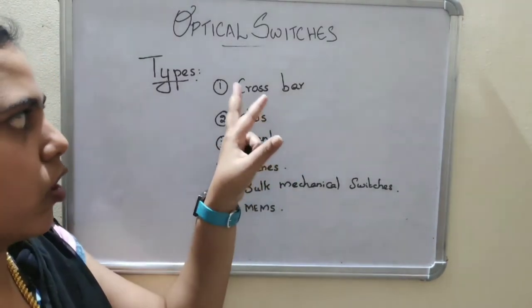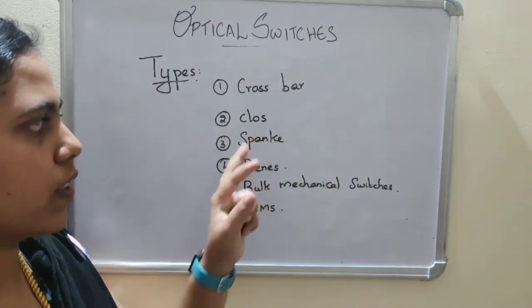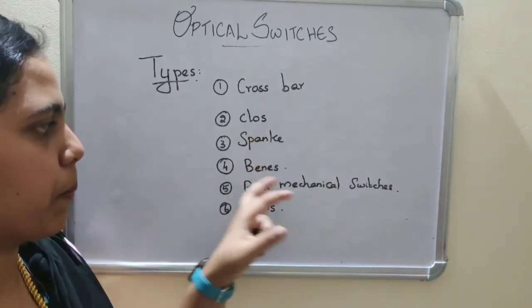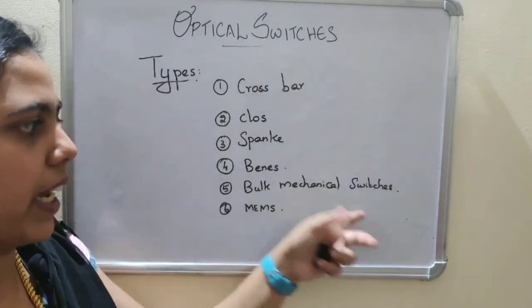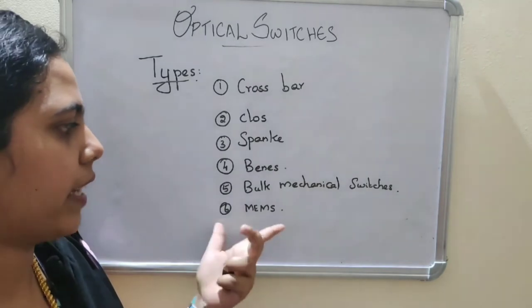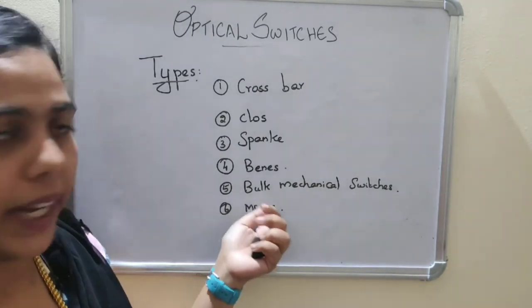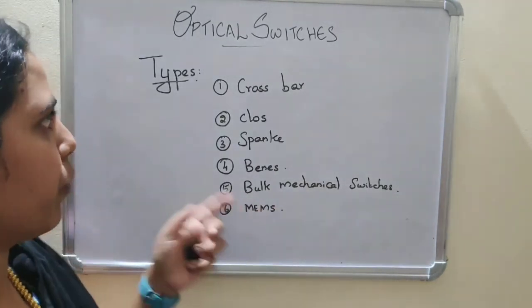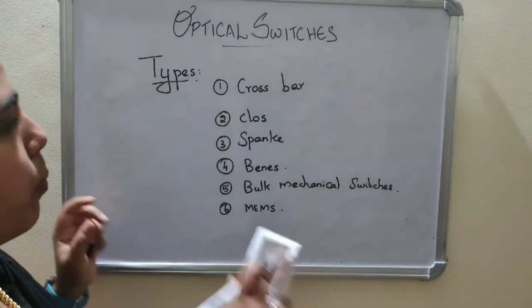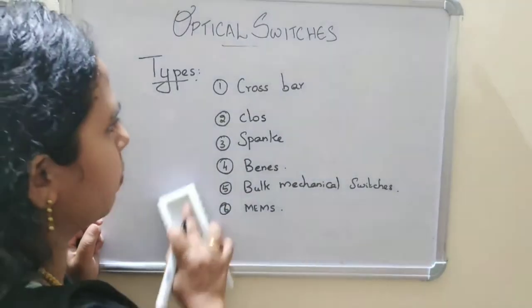So there are 6 types of switches: Crossbar, Closs, Pan Switches, Benes, Bulk Mechanical Switches, and MEMS Switches — that is Micro Electro Mechanical Switches. First we are going to discuss about Crossbar.